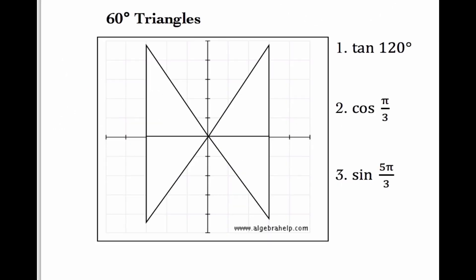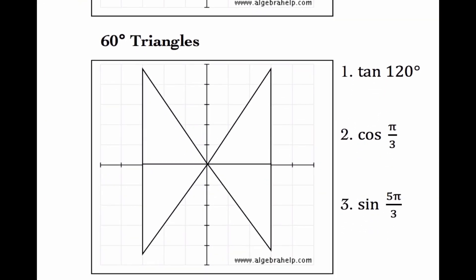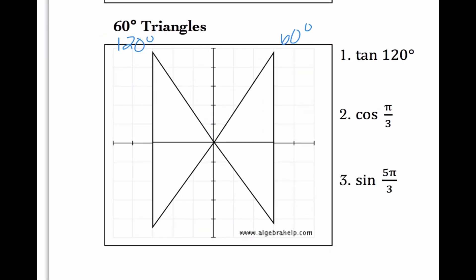I'm going to go through this next one a little bit quicker. If we look this time, I have 60-degree triangles. So my angles are going to be 60 degrees, 120 degrees, 240 degrees, and 300 degrees. And once again, the thing that we're going to see in common in all of these is that they are all 60 degrees away from the x-axis.